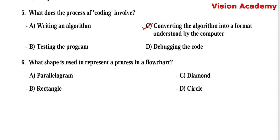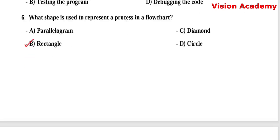Question number 6: What shape is used to represent a process in a flowchart? Option A, parallelogram. Option B, rectangle. Option C, diamond. Option D, circle. Here, option B, rectangle, is the right answer.